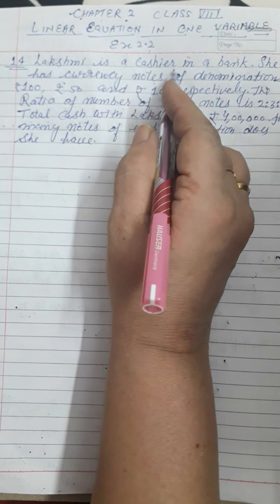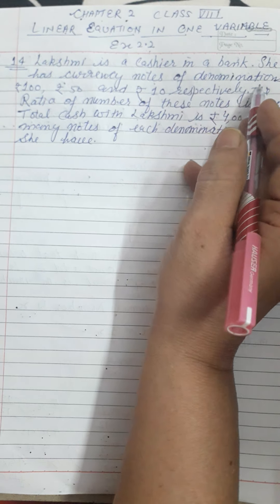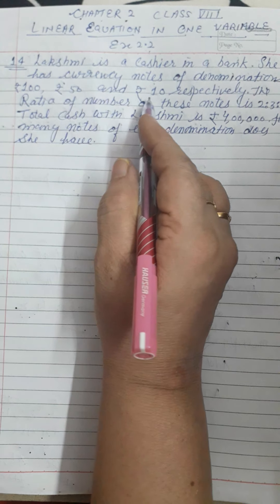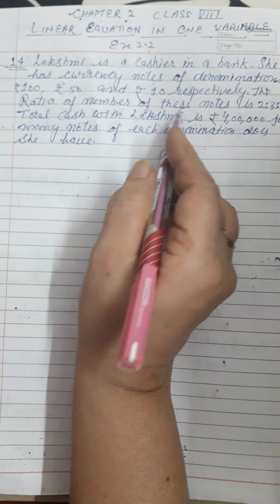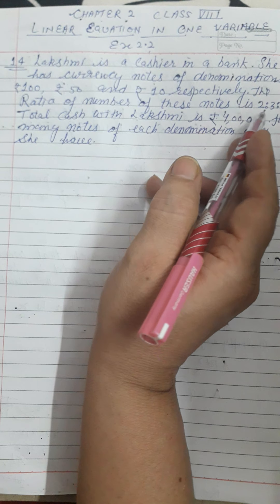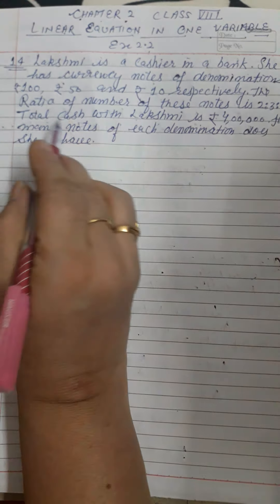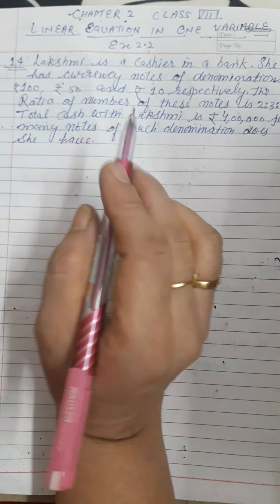Question No. 14. Lakshmi is a cashier in a bank. She has currency notes of denominations Rs. 100, Rs. 50, and Rs. 10 respectively. The ratio of number of these notes is 2:3:5. Total cash money with Lakshmi is Rs. 4 lakhs. How many notes of each denomination does she have?